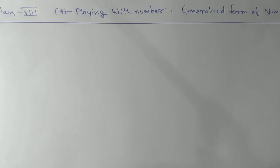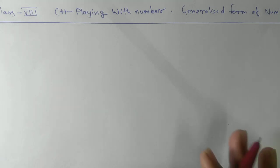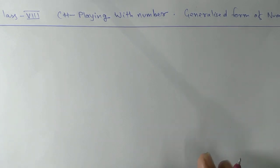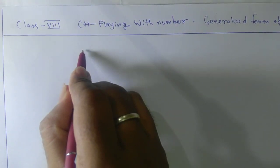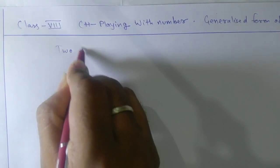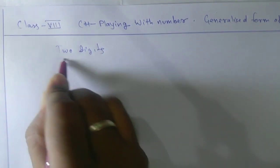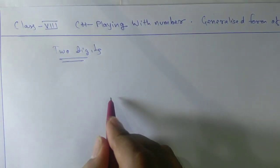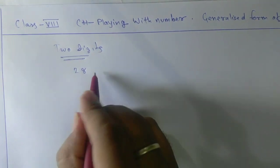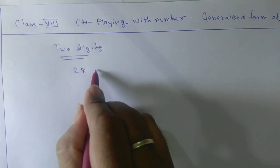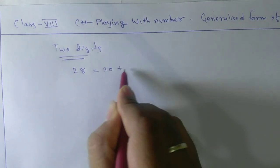Today we are going to start a new chapter — playing with numbers. The topic is the generalized form of numbers, specifically the general form of any two-digit number. For example, take 28: you know how to expand this number as 20 plus 8.